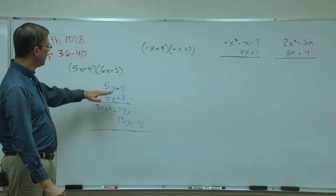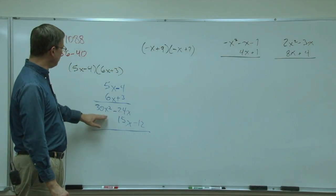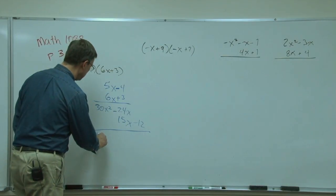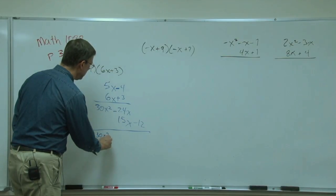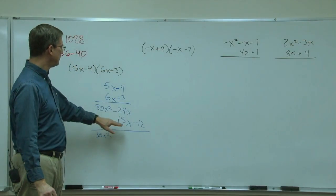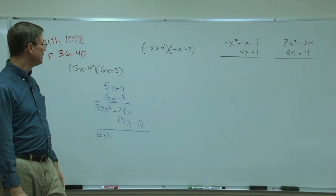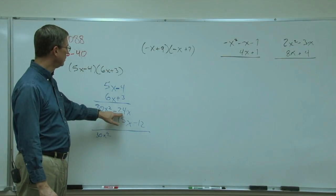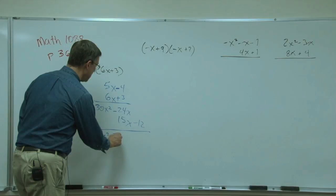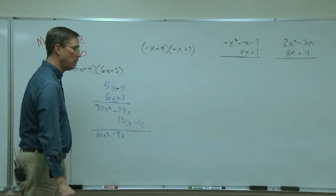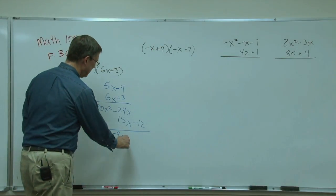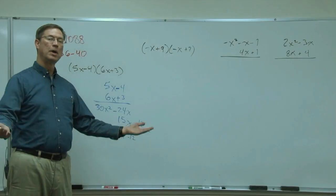All right, now we can add straight down. 30x squared. Negative 24 plus positive 15 means I subtract the smaller from the larger. Keep the sign of the larger, so minus 9x, and then minus 12, and we're done.